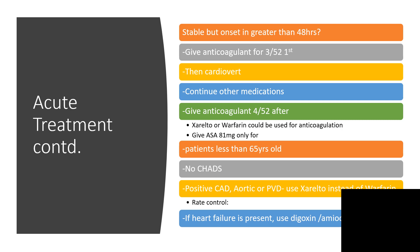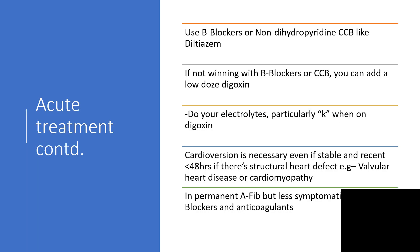If we're able to identify high risk, start anticoagulant right away. For rate control, we can use digoxin or amiodarone. You can also use beta-blockers or a non-dihydropyridine calcium channel blocker — an example is diltiazem. If you're not winning with beta-blockers or calcium channel blockers, you can add a loading dose of digoxin. However, digoxin and potassium compete at the receptor, so watch out for electrolyte levels, specifically potassium.